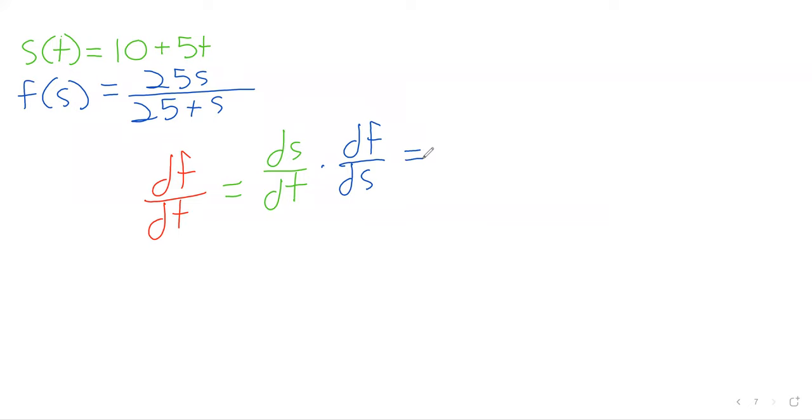And I have asked how the focal length is changing with time, and I've already indicated that we need to just take these derivatives and multiply them together. One of these derivatives is hopefully pretty straightforward. The derivative of that s of t is just 5. The derivative of 10 is 0. The derivative of 5t is 5. 0 plus 5 is 5.